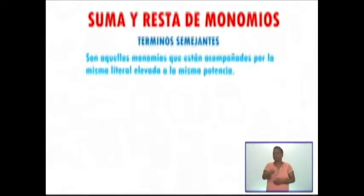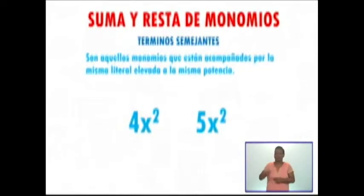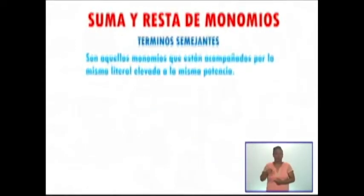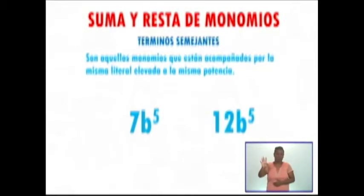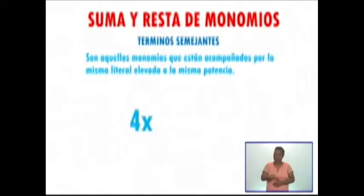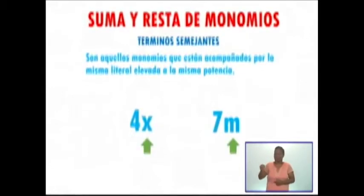Vamos a ver otro ejemplo. Aquí tengo 4x cuadrada y 5x cuadrada. Tienen la misma literal elevada a la misma potencia, por lo tanto son términos semejantes. Aquí tengo 7b a la quinta potencia y 12b a la quinta potencia. Tienen la misma literal elevada a la misma potencia, por lo tanto son términos semejantes. Aquí tengo 4x y 7m. Tienen literales diferentes, por lo tanto no son términos semejantes.